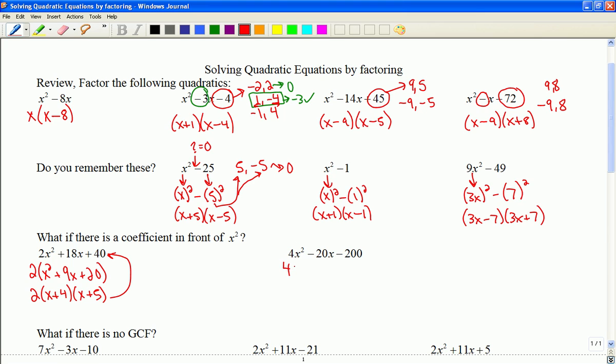In this one, again, I can take a 4 out. So I'll have x squared minus 5x minus 50. And if I just focus on this inside piece, that would be two numbers that multiply to negative 50 and add to negative 5. 5 and 10 come to mind. In order to make it add up to negative 5, I'm going to use negative 10 and positive 5.